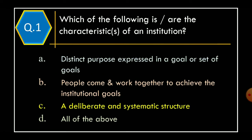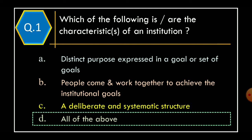Question 1. Which of the following is or are the characteristics of an institution? Option A: Distinct purpose expressed in a goal or set of goals. Option B: People come and work together to achieve the institutional goals. Option C: A deliberate and systematic structure. Option D: All of the above. The correct option is Option D: All of the above.